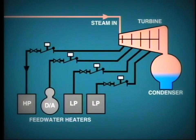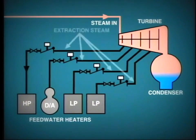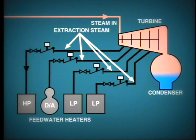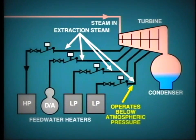Here is a simplified arrangement where we show just four stages of feedwater heating and therefore four extraction lines only. The extraction steam lines operate at much lower pressure than the main steam. In fact, in the case of a condensing turbine, the last stage of extraction will operate below atmospheric pressure.